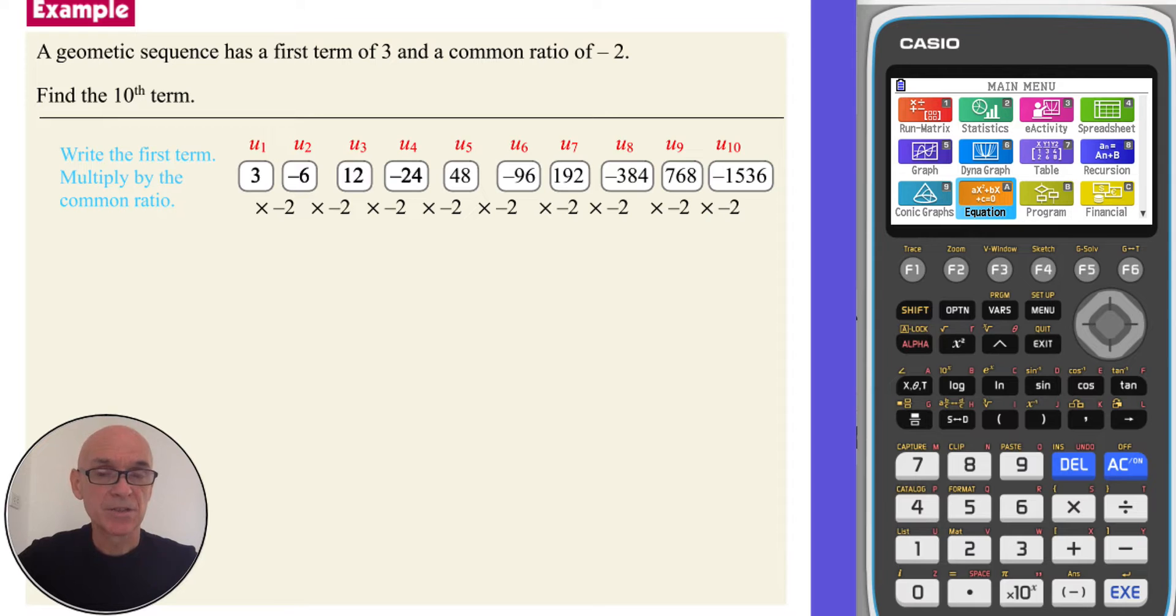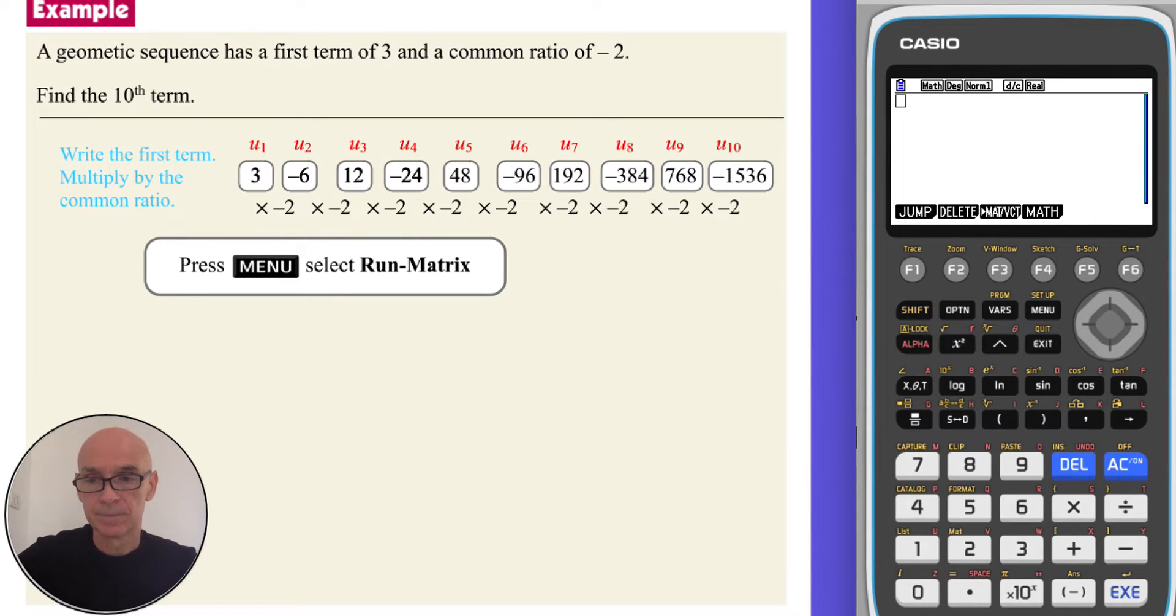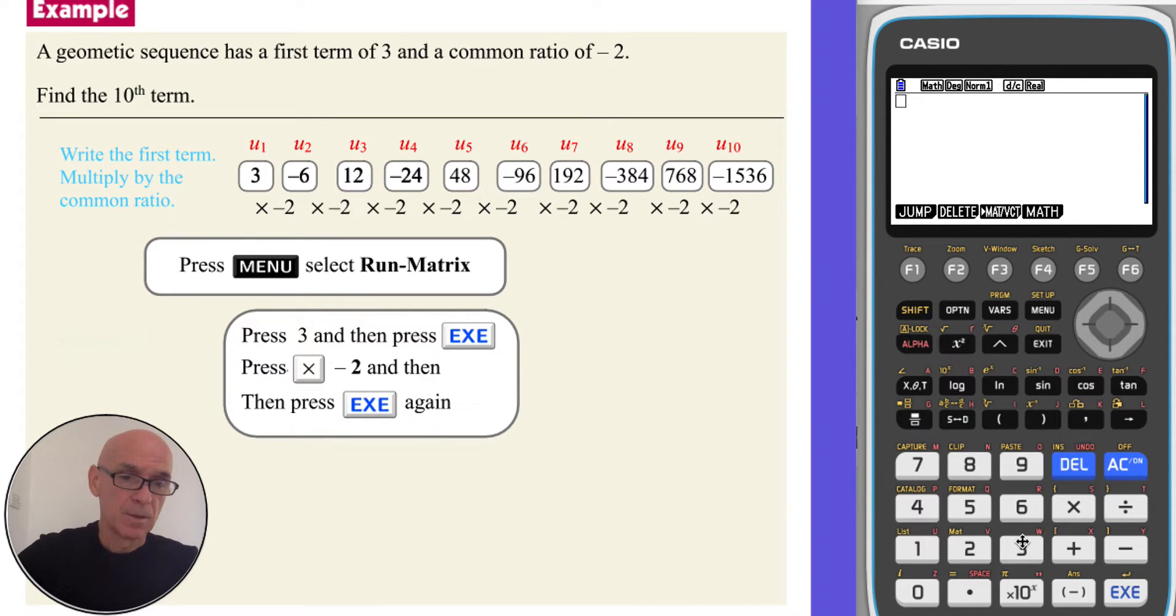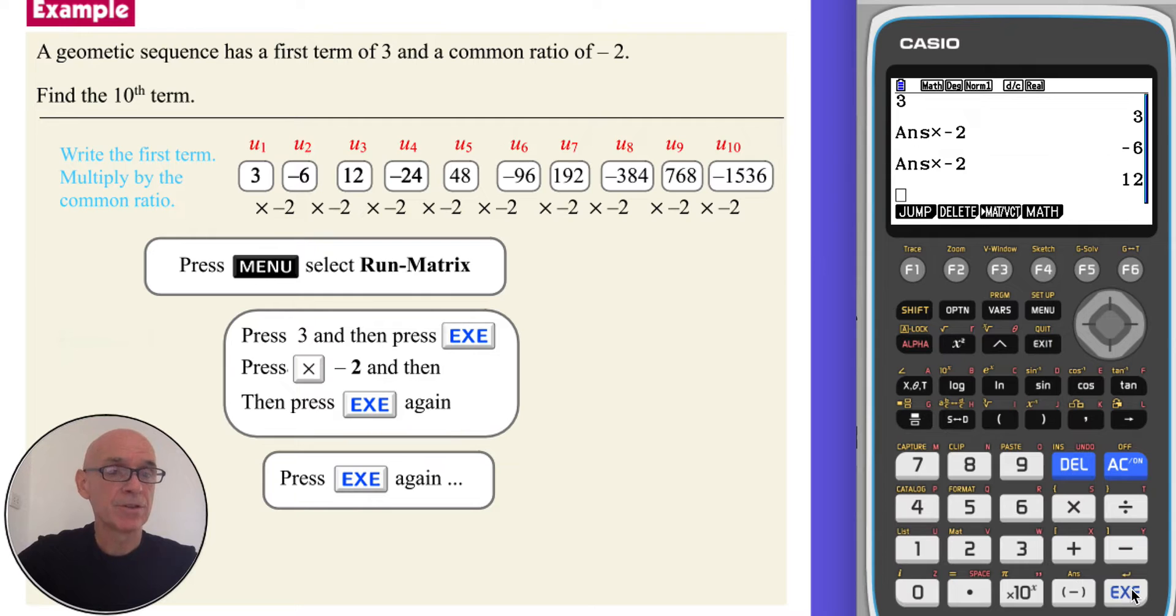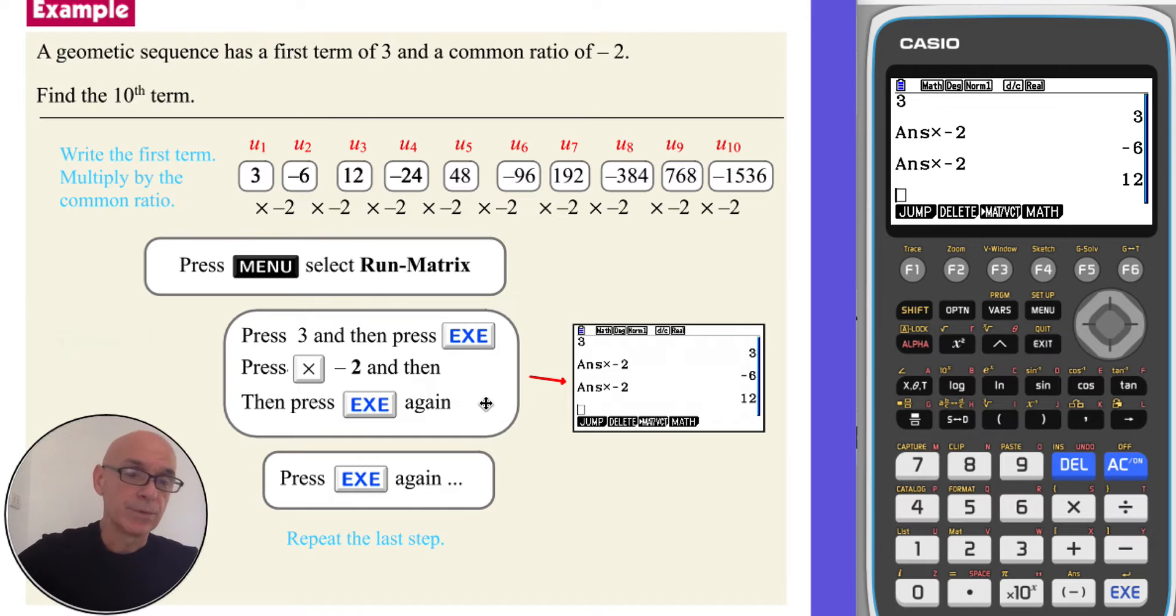This simple calculation can be done neatly on your calculator. From the main menu if we choose run matrix option 1, we enter the first term by pressing 3 and pressing execute, then multiply by the common ratio, multiply by negative 2 and press execute again. We will get the second term of negative 6. Simply pressing execute again will give us a third term of 12, and if we continue pressing execute keeping track of which term we are calculating, eventually we will get to the tenth term.